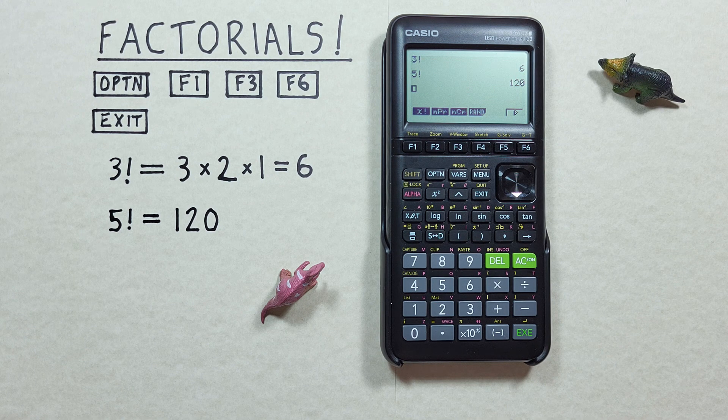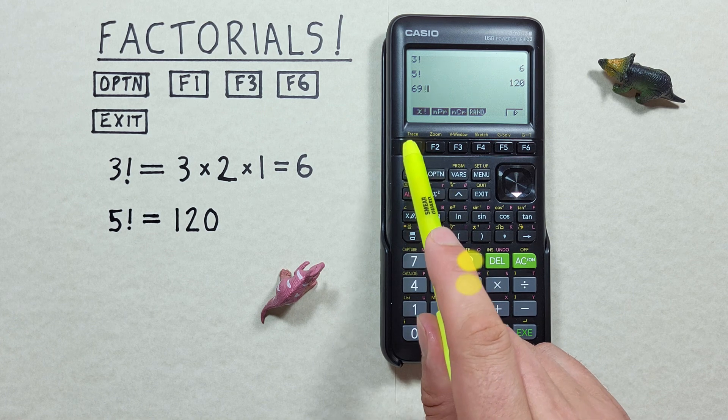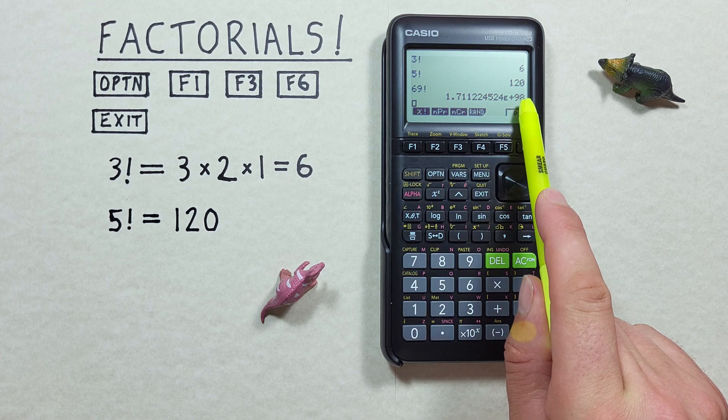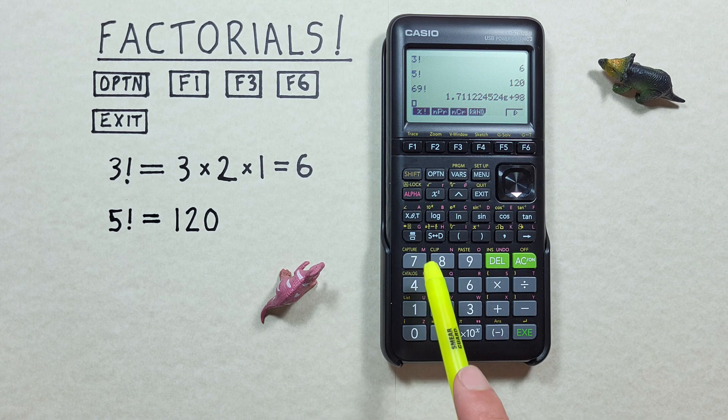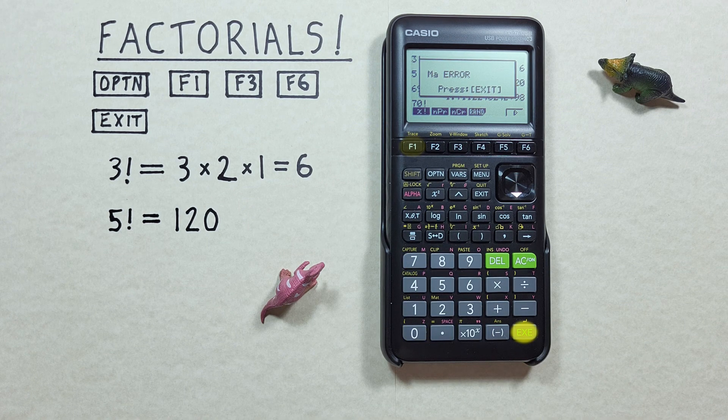In fact the largest factorial this calculator can display is 69 factorial, which we see gives us a result. But if we try 70 factorial we get that error.